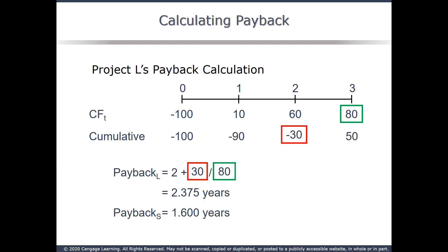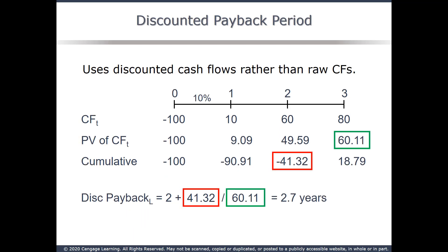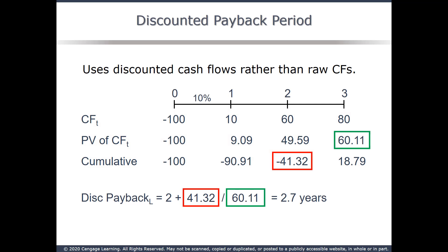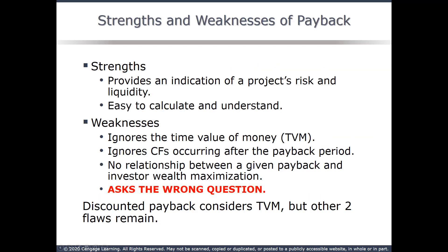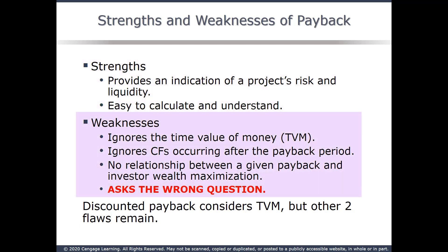One major problem with payback is that it ignores the time value of money. Discounted payback solves that issue — the technique is the same, except the cash flows are discounted before they're accumulated. The discounted payback will be longer than regular payback, and the sum of the discounted cash flows will always equal NPV. Both paybacks give an indication of risk and liquidity, which may be critical to smaller firms. However, regular payback ignores the time value of money, and both paybacks ignore cash flows after the payback period, which biases results toward projects with larger cash flows earlier on. The main problem is that payback asks the wrong question — we're looking for projects that increase the value of the firm, but payback measures when we'll get our investment back. Discounted payback does use the time value of money, but the other issues still exist.